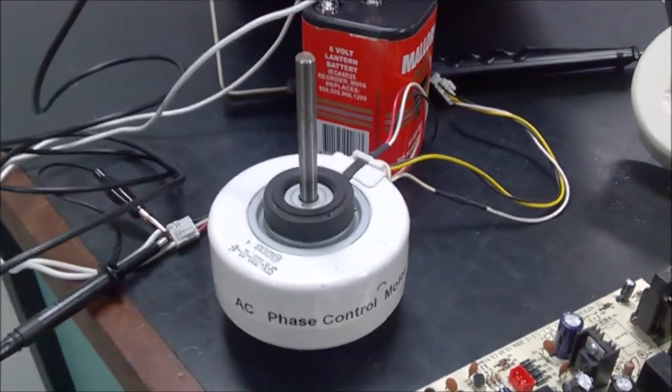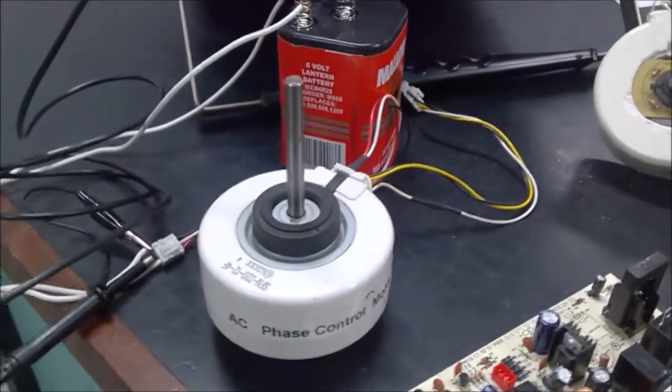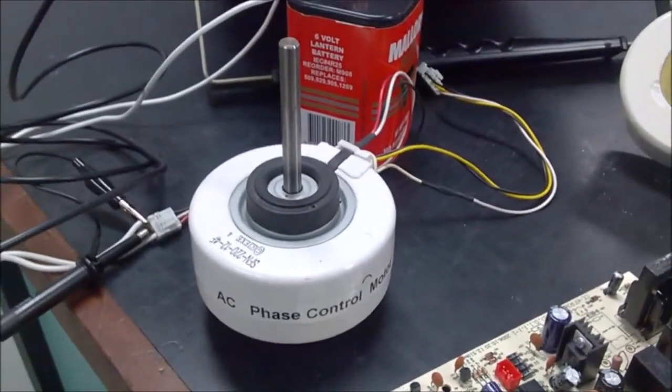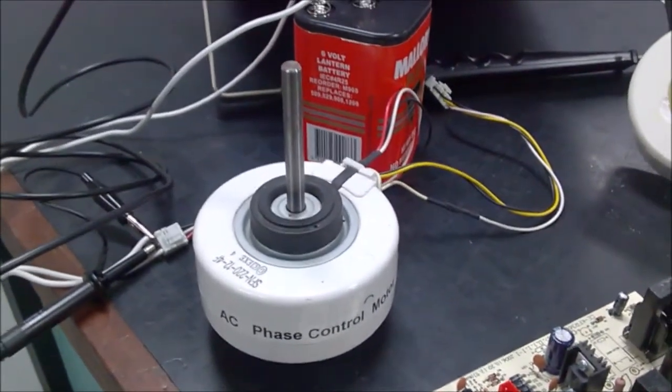Now the phase control motor gets its name because the phase itself being supplied to the motor is varied or controlled. So we're not necessarily working with a fixed 240 volts Australian New Zealand voltage.